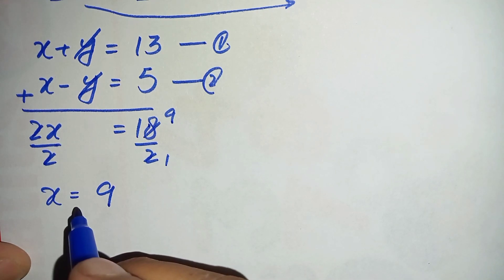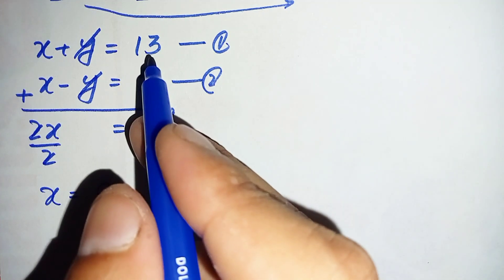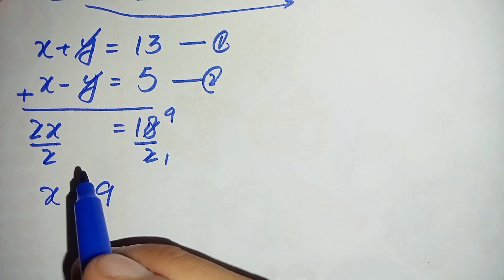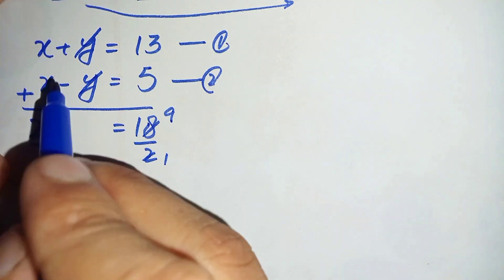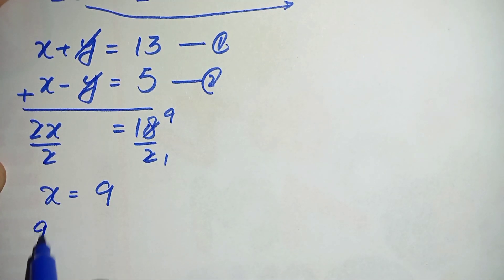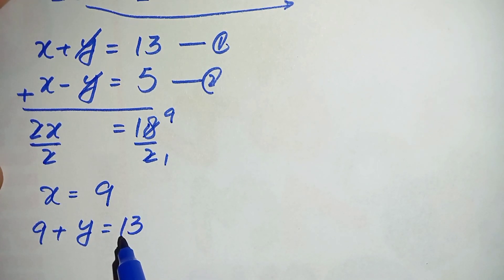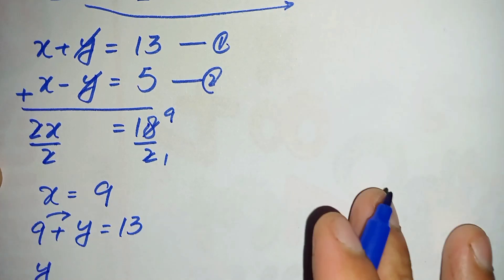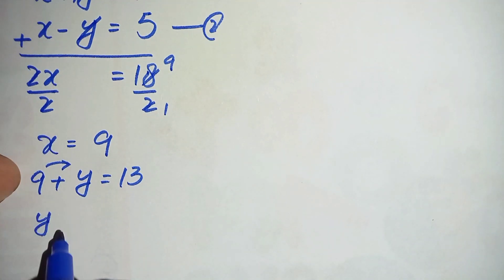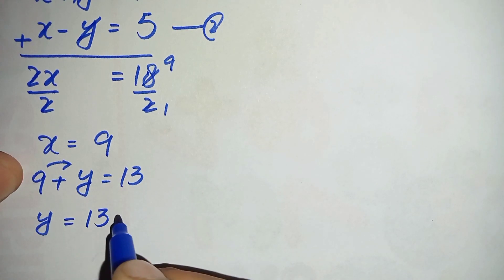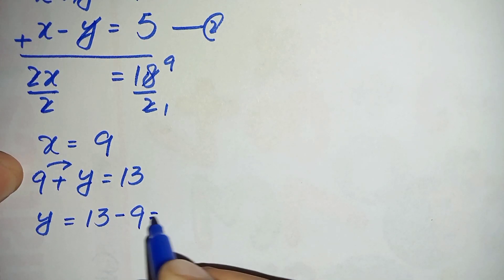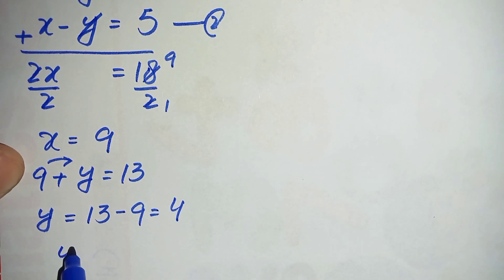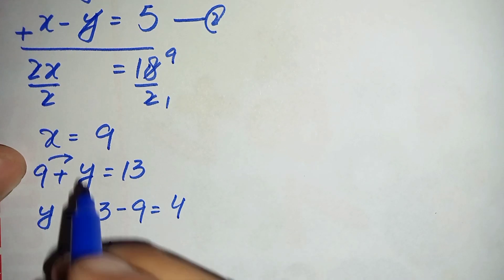To find the value of y, we substitute x equals 9 into equation number one: x plus y is equal to 13. So 9 plus y is equal to 13. Moving 9 to the right hand side, y is equal to 13 minus 9, which is 4. So the value of y is 4.